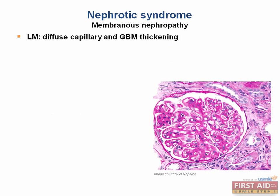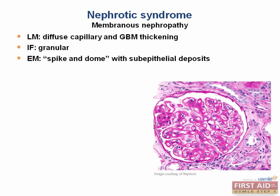Next is membranous nephropathy. This one is a bit more complicated. The common histologic findings include capillary and glomerular basement membrane thickening on light microscopy, and the glomerulus is completely involved. There is a granular pattern on immunofluorescence due to immune complex deposition, and on electron microscopy it causes a spike and dome appearance marked by subepithelial deposits.